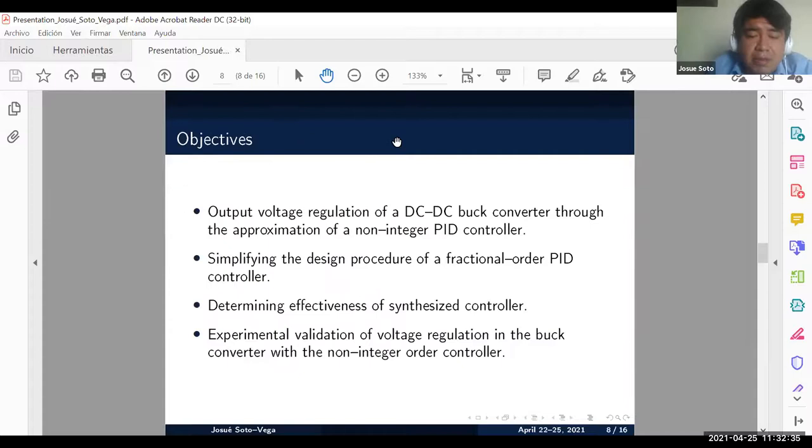After the background we set the objectives that were established when carrying out this work. First, we seek to obtain voltage regulation through fractional control in buck converter. Second, simplify the design procedure. Third, determine the effectiveness of the controller. And fourth, validate through the implementation of the converter and the controller. Following these objectives and the method to synthesize the controller, the next step is to release numerical simulation.